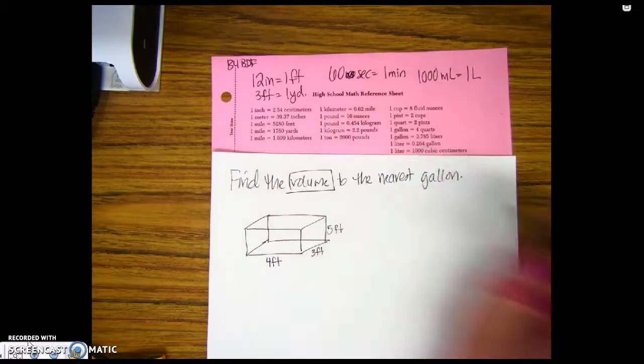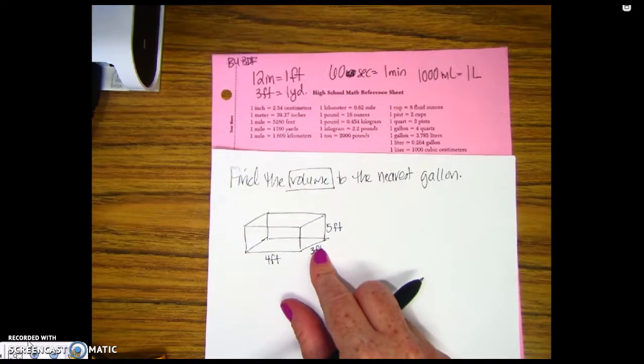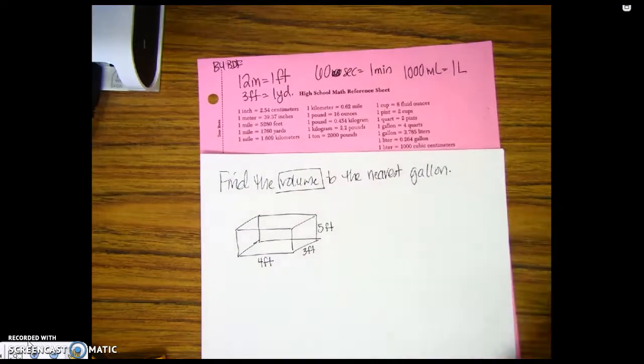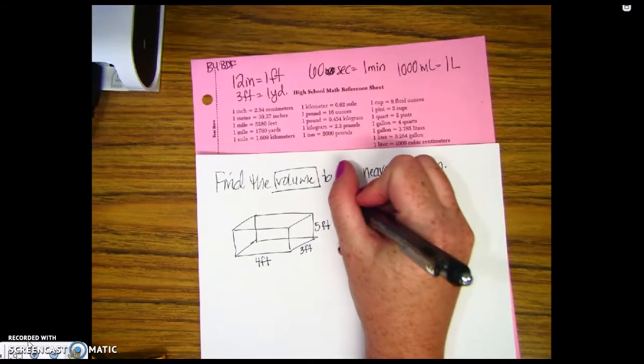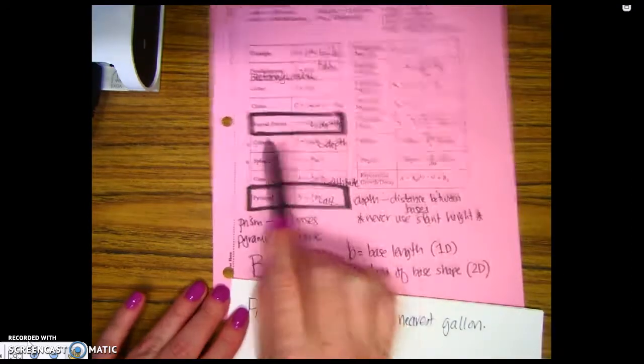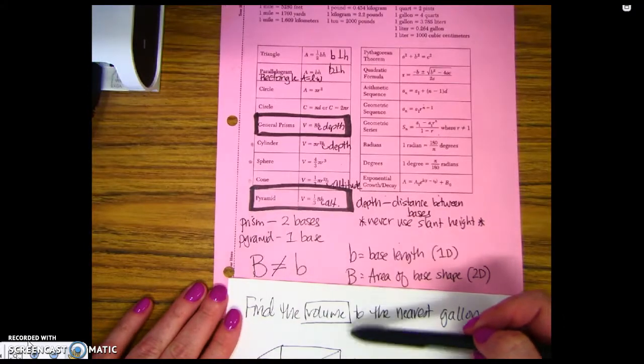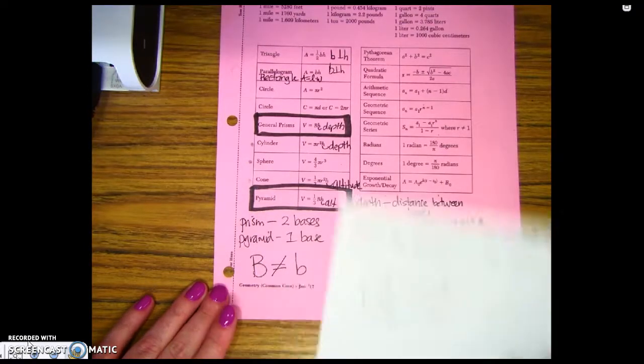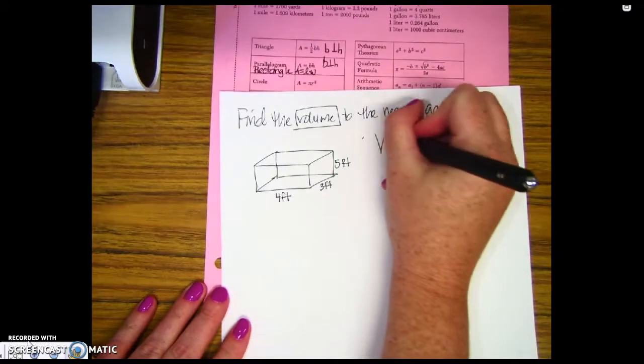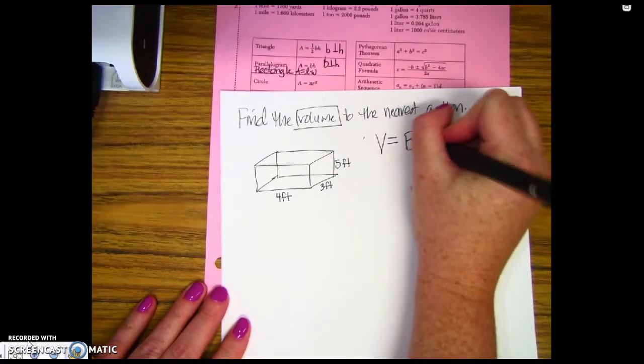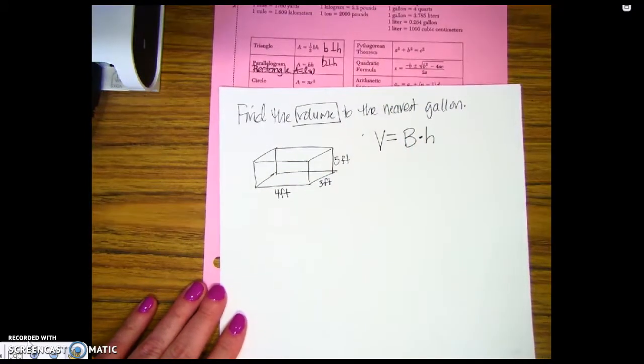What I'm gonna just do is find the volume first. So this is a rectangular prism. Let's see, maybe it's a fish tank and it's got water in it. So my first job is to look at it's a prism and they'll typically tell you you have a rectangular prism. So my volume equals area of the base times the height of the prism.